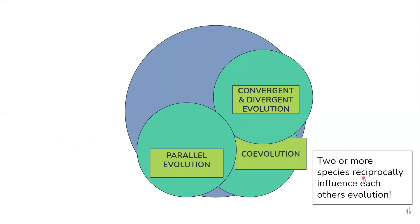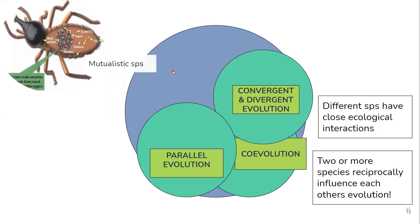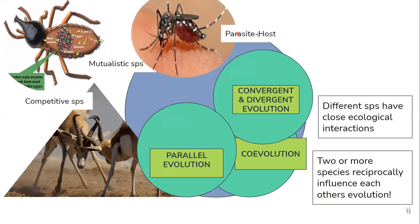Next is co-evolution, where two or more species influence each other's evolution — one evolves and it influences the other. It is observed in species with close ecological interactions. These can be of three types: mutualistic species, for example a termite which depends on a bacteria to degrade its cellulose; competitive species, where competition causes both to evolve and get better; and finally the parasite-host relationship, where both are in a race to evolve.